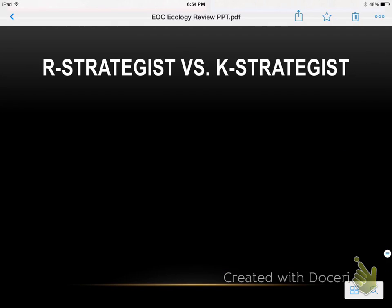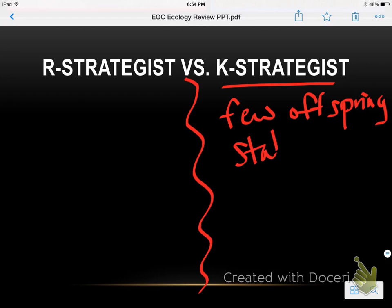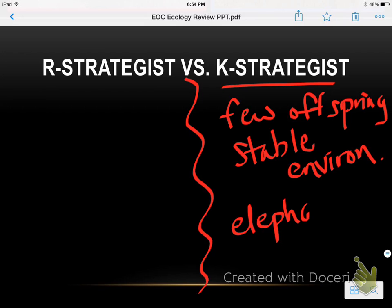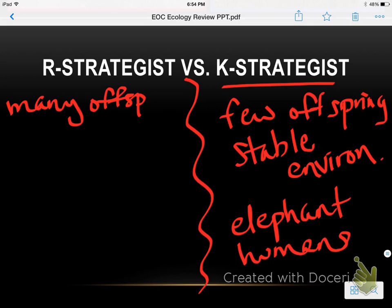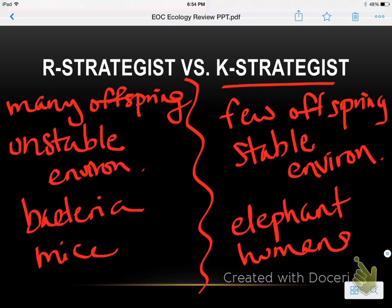R strategist versus K strategist — a lot of students struggled with this. A K strategist produces only a few offspring and prefers stable environments. An example is an elephant; humans are also K strategists. R strategists have many offspring and do well in unstable environments — things like bacteria and mice that produce lots of babies a year.